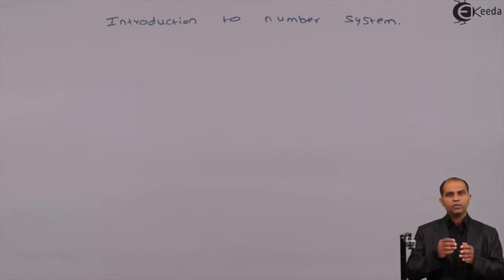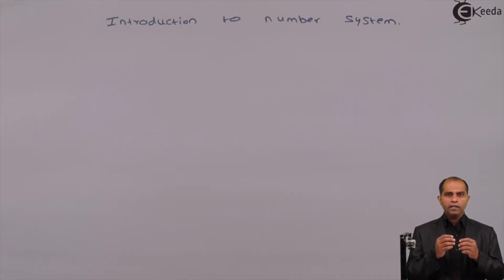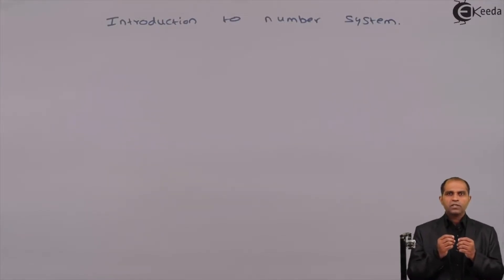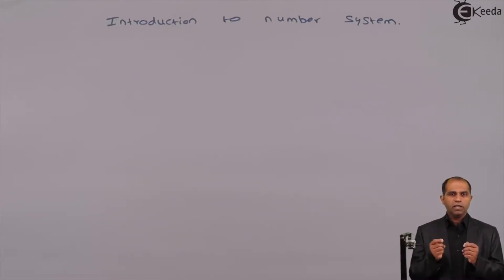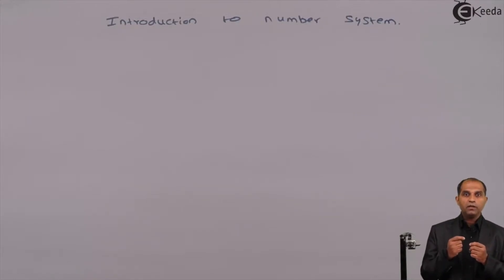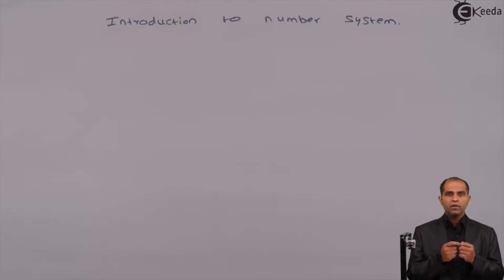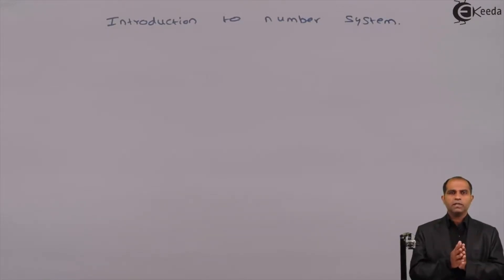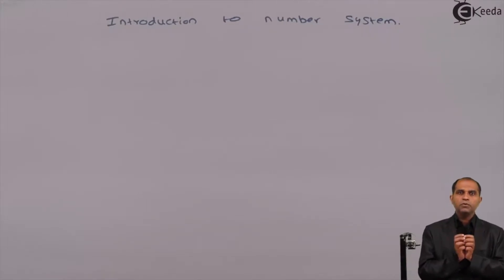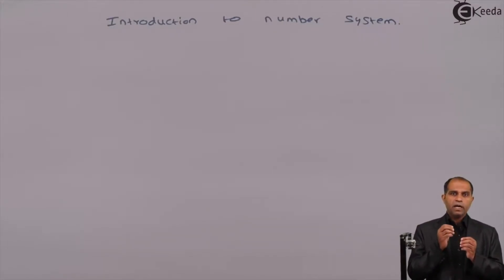Apart from these two types of data, we have some more additional types like characters and strings. When data for any question is given as a single character — for example, if I ask you to specify the wing of your building, is it A wing or B wing or C wing or D wing — the input is going to be only a single character. If I ask you to enter your grade, your grade will be A, B, C, D, E, F, G, O or P. Here the input is only a single character, which we call a character input.